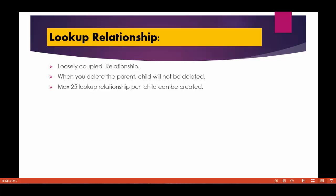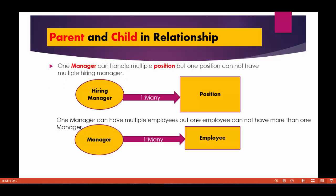Let's start with the lookup relationship. It's a very loosely coupled relationship between two objects. When you delete the parent, the child will not be deleted. For example, one particular manager can have multiple positions under him — there is a one-to-many relationship between a hiring manager and a position object. Wherever there is 'many', that becomes the child object, and wherever there is 'one', that is the parent object. So hiring manager is the parent and position is the child.